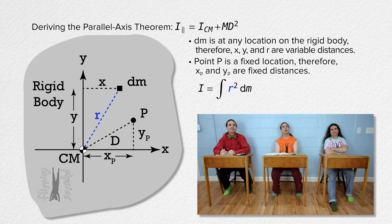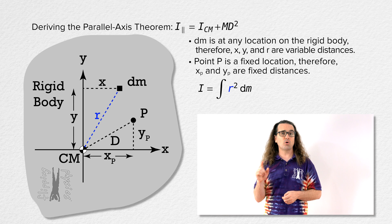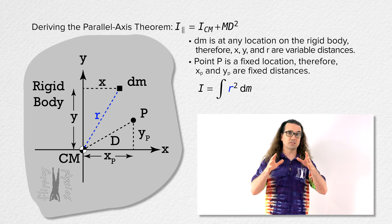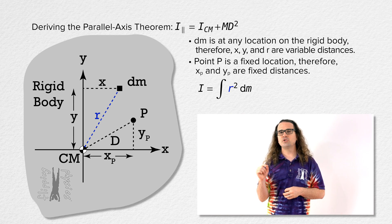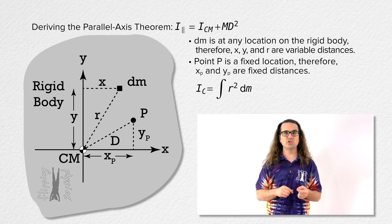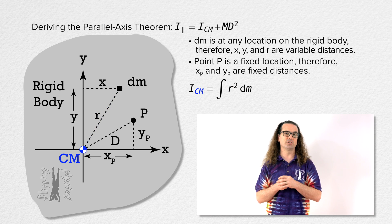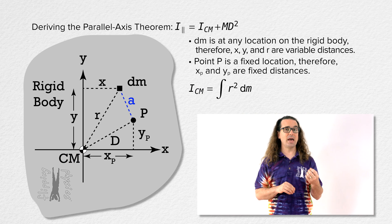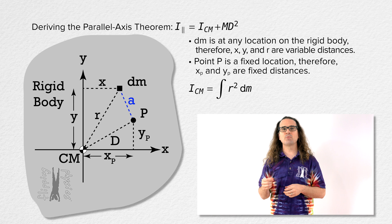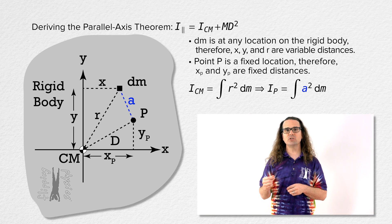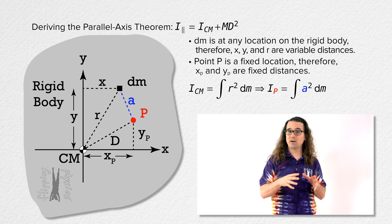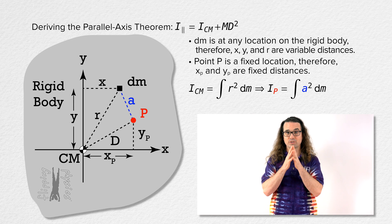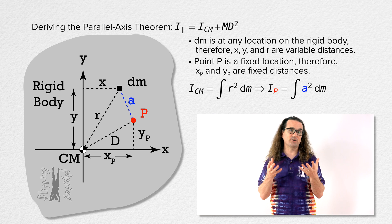Technically, because r is defined as the distance from the origin to dm, or the distance from the center of mass to dm, the equation just given is for the rotational inertia about the center of mass of the rigid body. If we define a as the distance from dm to point P, then we replace the variable distance r with the variable distance a. We get the rotational inertia of the rigid body about the axis through point P, parallel to the axis through the center of mass.